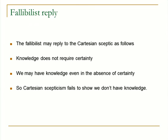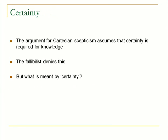The fallibilist is going to have a simple reply. The fallibilist will simply reject the assumption. Knowledge, according to the fallibilist, doesn't require certainty. Given that knowledge doesn't require certainty, we can have knowledge even if we don't have certainty. So we can reject this Cartesian skeptical position. What is in dispute between the Cartesian skeptic and the fallibilist is whether certainty is required for knowledge.